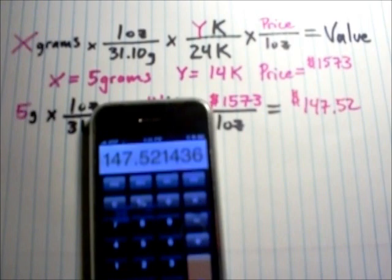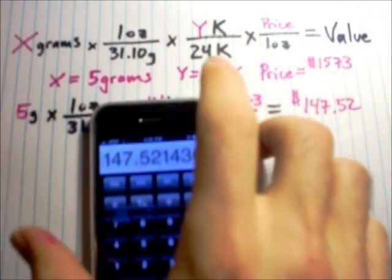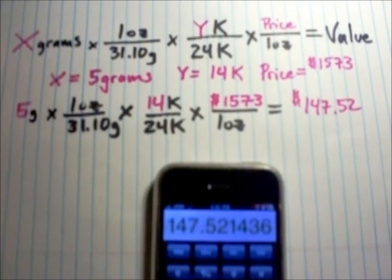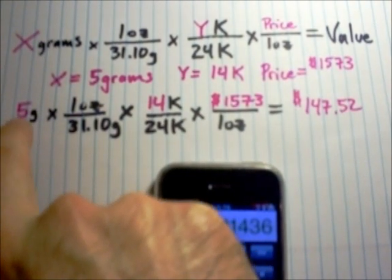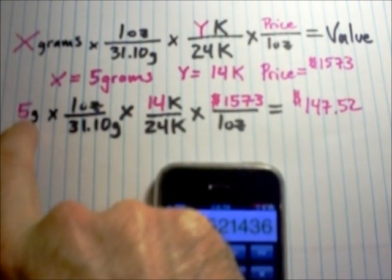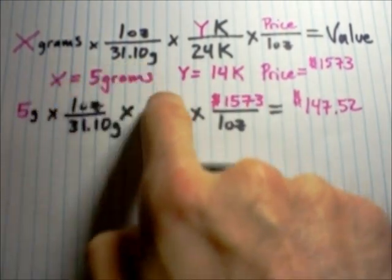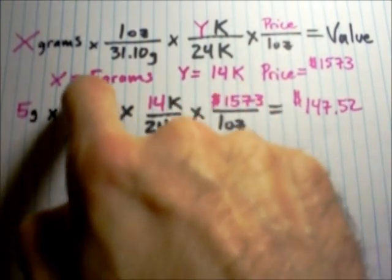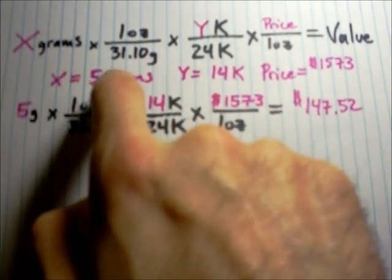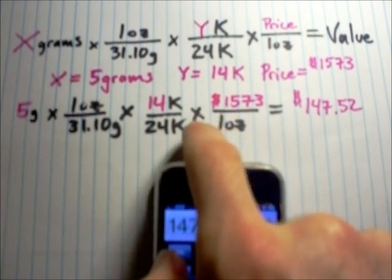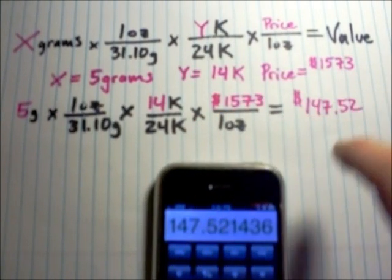So, for those of you that maybe have trouble with the algebra that this involves, just take your number. If the number's on top, you hit the multiply button. 5 times 1 times 14 times 1573. And if it's on the bottom, you divide by that number. Then divide it by 31.10 divided by 24 divided by 1 and then equals and then you will get your number.